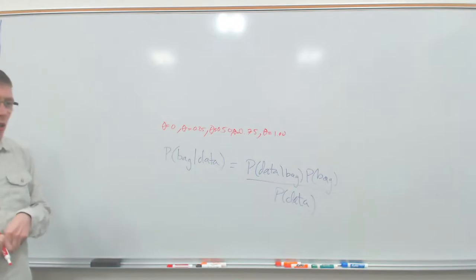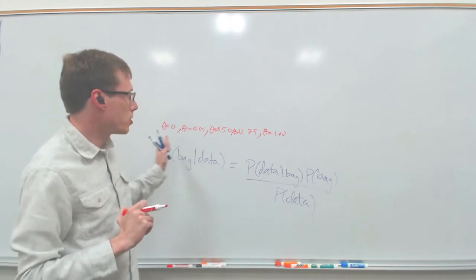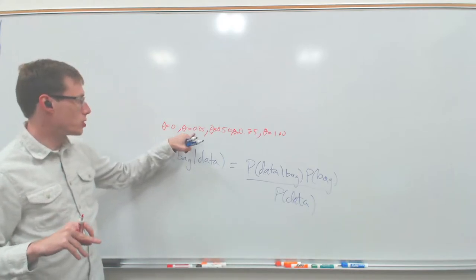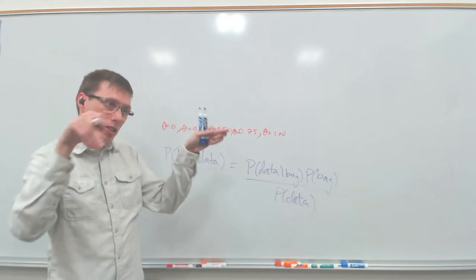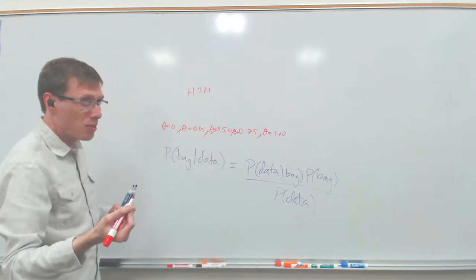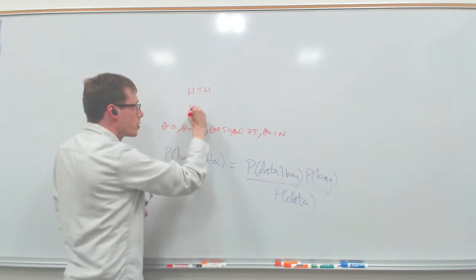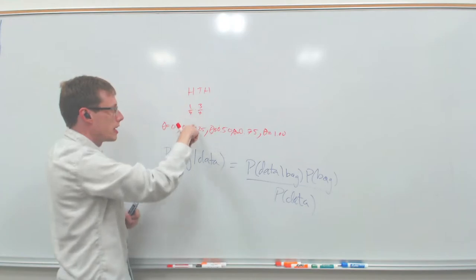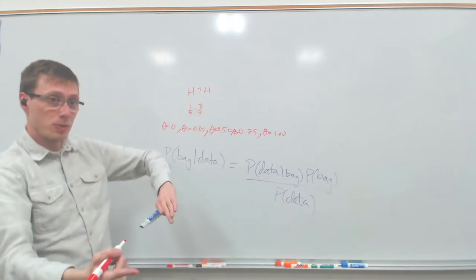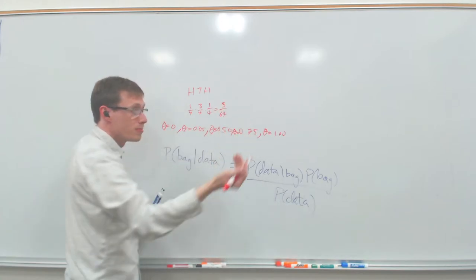If I had given you the direct order — say heads, tails, heads — this would reduce exactly to the bag situation. The scenario with zero red corresponds to theta=0, one-out-of-four red to theta=0.25, and so on. The probability of getting heads-tails-heads if theta=0.25 is (1/4)(3/4)(1/4) = 3/64, exactly as before.